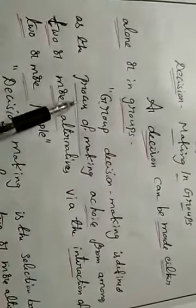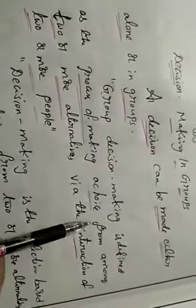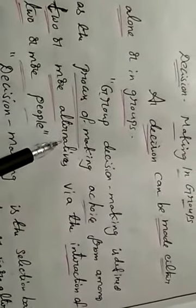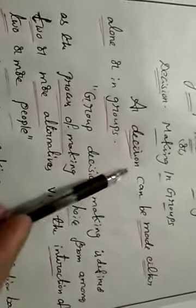Group decision making is defined as the process of making a choice from among two or more alternatives with the interaction of two or more people. If we take the normal decision making point of view, we have to consider many persons and among their different suggestions, we have to take one decision.